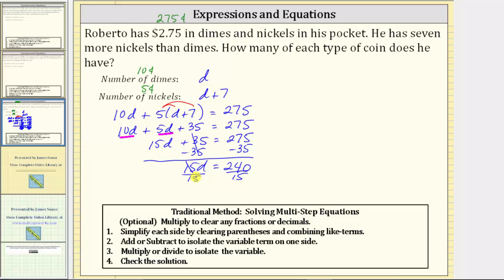On the left, 15 divided by 15 is equal to one. One times d is d. On the right, 240 divided by 15 is equal to 16.